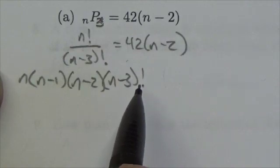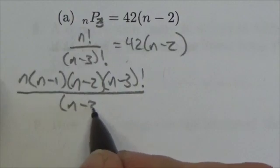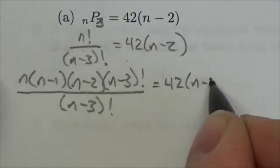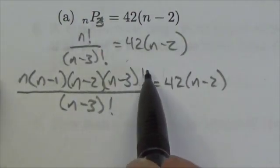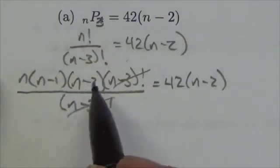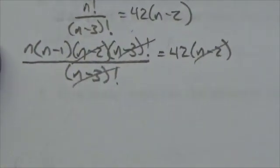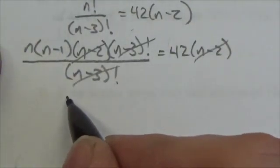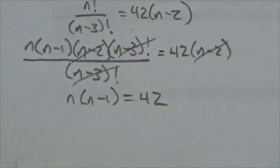I put the factorial to indicate it continues down to 1, but then I've got the (n minus 3) factorial in the denominator, with 42(n minus 2) on the other side. The (n minus 3) factorials cancel, and then the (n minus 2) terms on both sides cancel as well, giving ones when divided out.